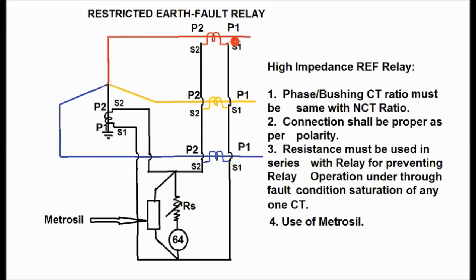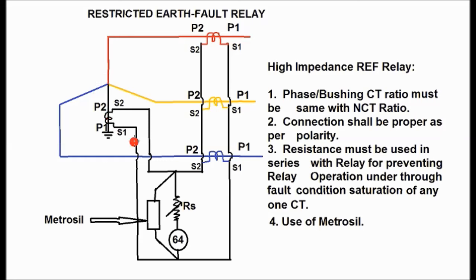P1 is connected towards the bus side and P2 is connected towards the transformer side for all the bushing CTs. If taken from the bushing CT, P2 shall be towards the transformer side for all the phases. For the neutral CT, P1 shall be connected towards the earth side and P2 shall be connected towards the neutral side.